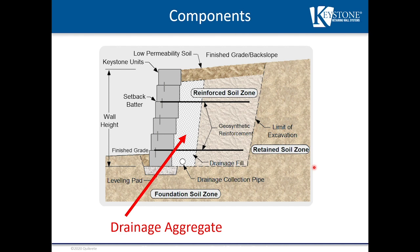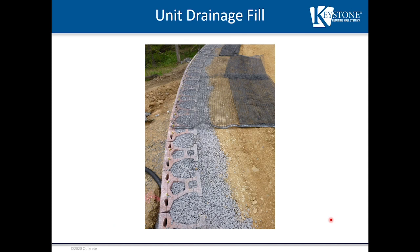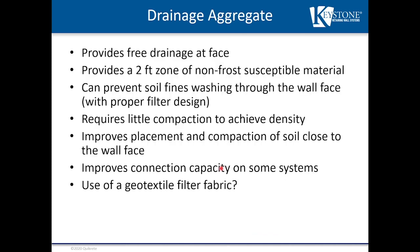Our first topic is the drainage aggregate included in the retaining wall blocks themselves — typically one foot behind a 12-inch deep unit. For an 18-inch deep unit, the drainage zone is slightly less, targeting a two-foot zone from the face of the wall to the end of drainage material. This provides free-draining, non-frost-susceptible material at the face and can prevent soil fines from washing through with proper filter design.